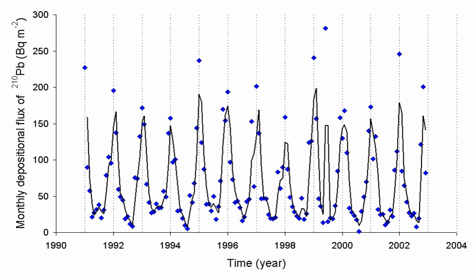Despite the existence of Z=8, no Rn-8 compounds have been claimed to exist; radon octafluoride should be highly unstable chemically. It is predicted that the most stable Rn-8 compound would be barium parodonate Ba2RnO6, analogous to barium perxenate. The instability of Rn-8 is due to the relativistic stabilization of the 6s shell, also known as the inert pair effect. Radon reacts with the liquid halogen fluorides ClF, chlorine trifluoride, chlorine pentafluoride, bromine trifluoride, bromine pentafluoride, and IF7 to form radon difluoride.